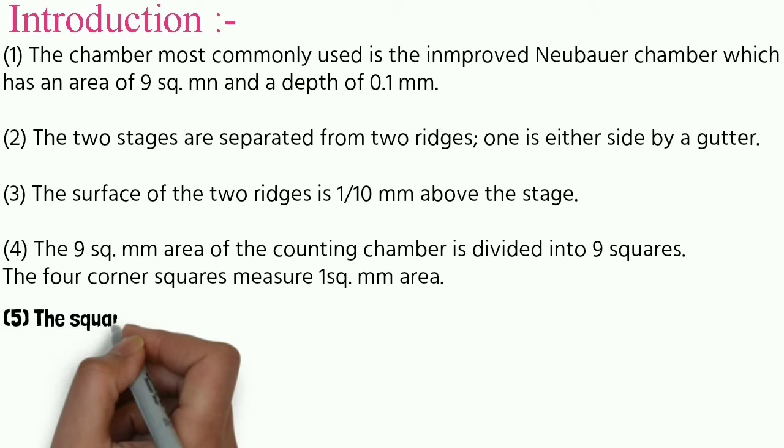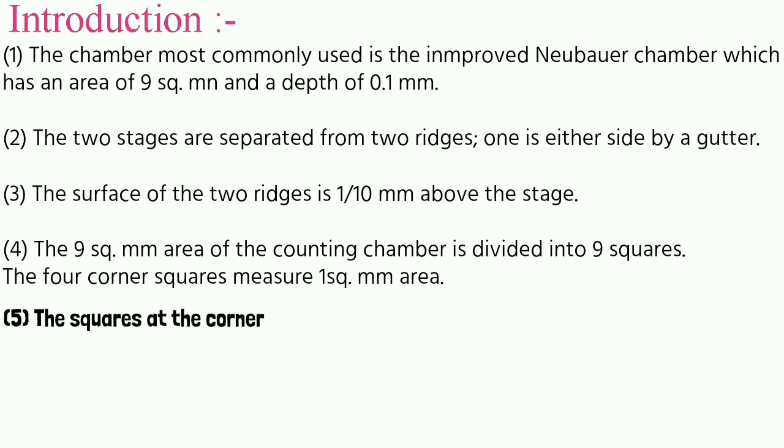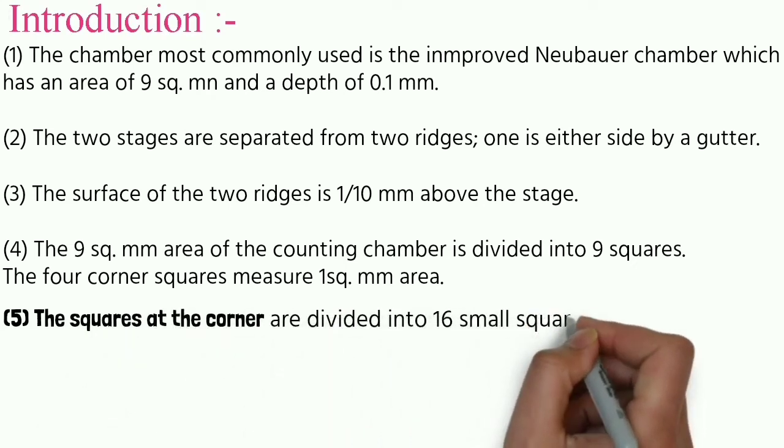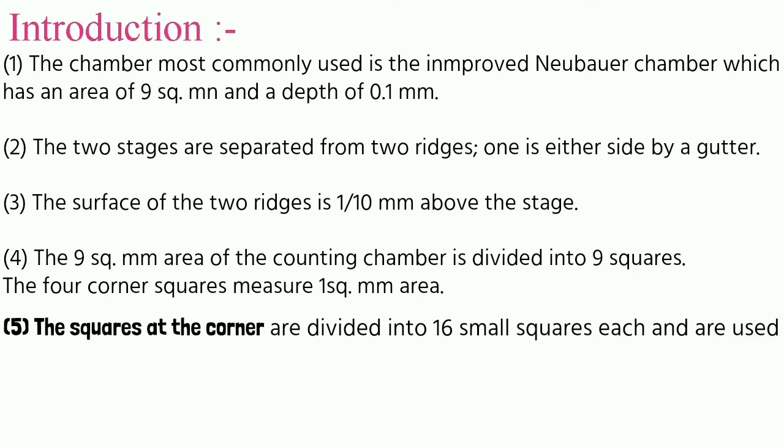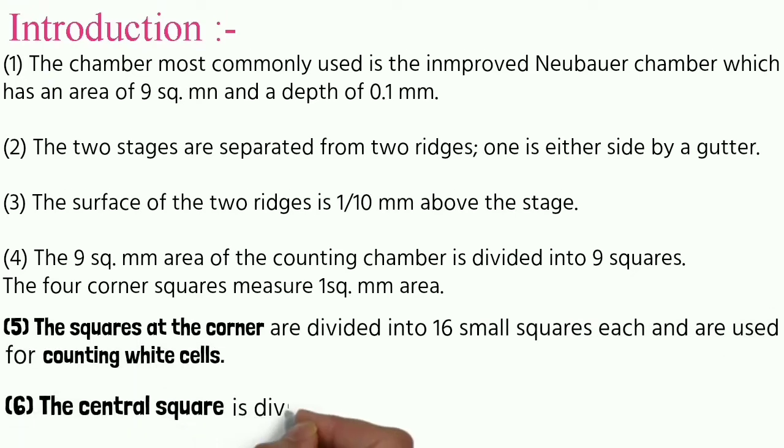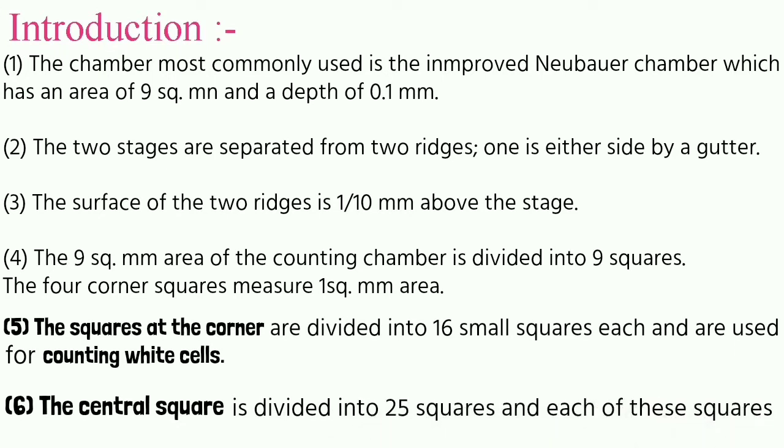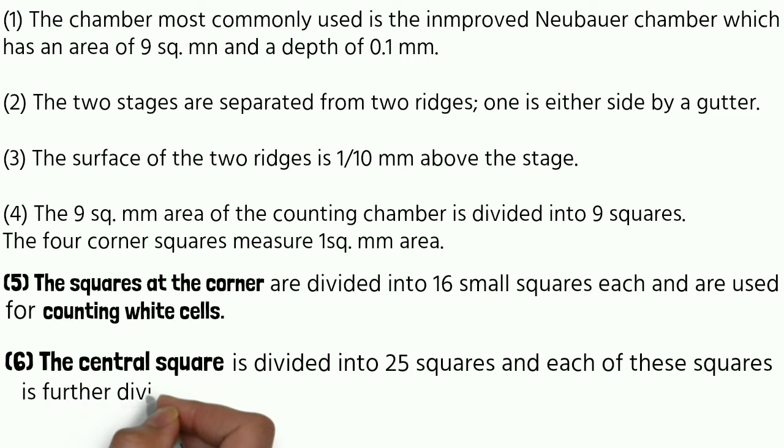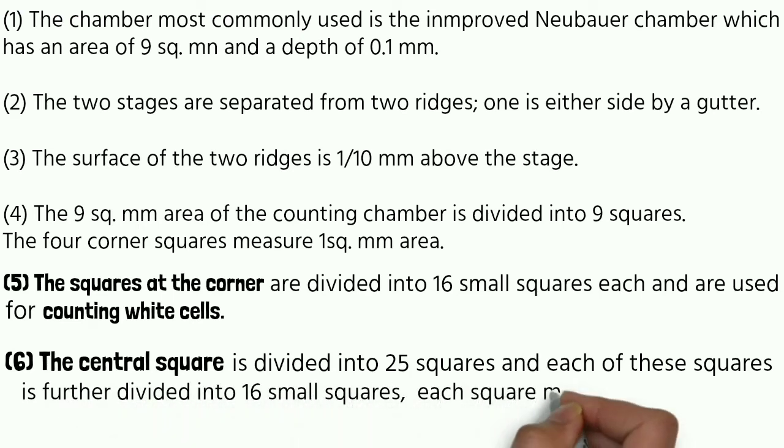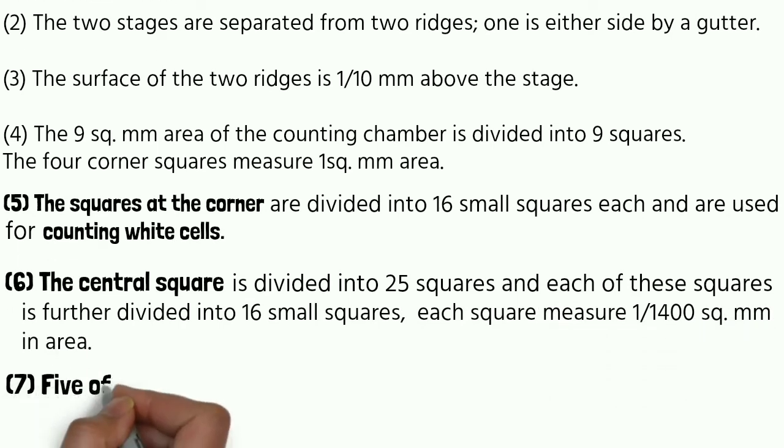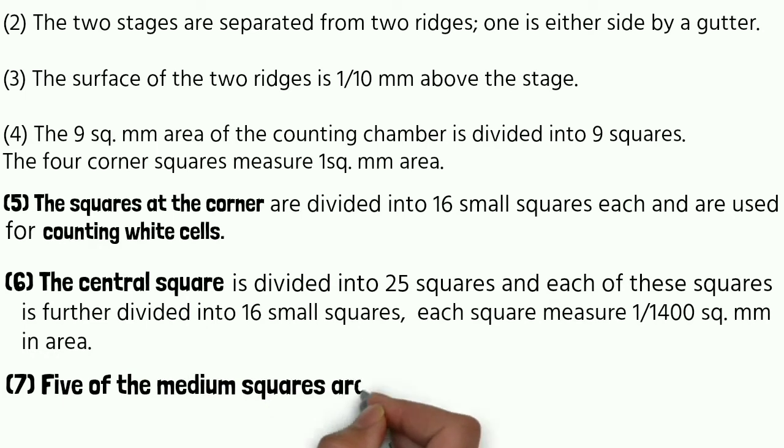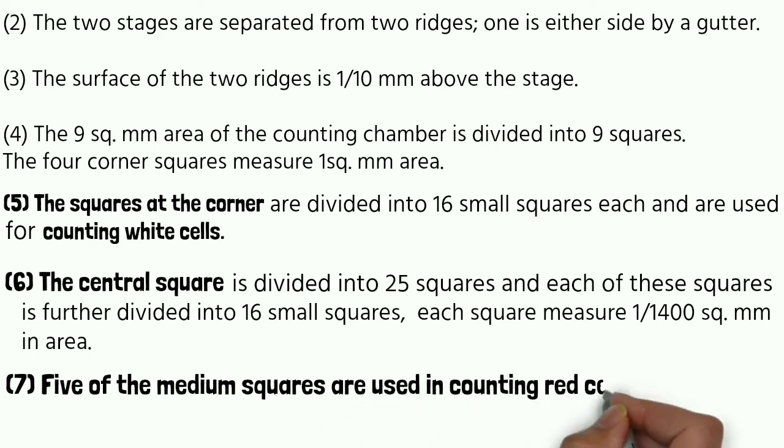The corner squares are divided into 16 small squares each and are used for counting white cells. The central square is divided into 25 squares, and each of these is further divided into 16 small squares. Each small square measures 1/400 square mm in area. Five of the medium squares are used for counting red cells.